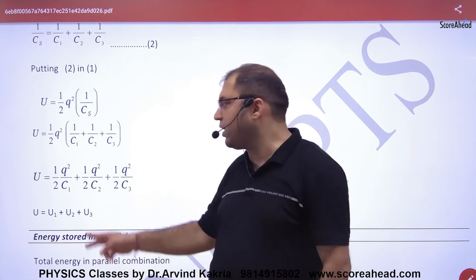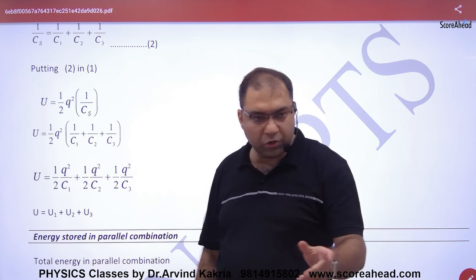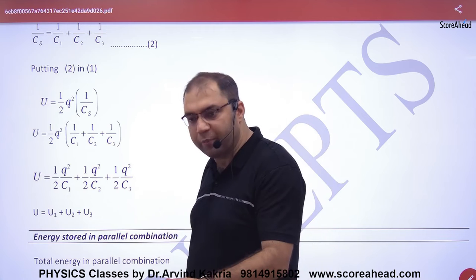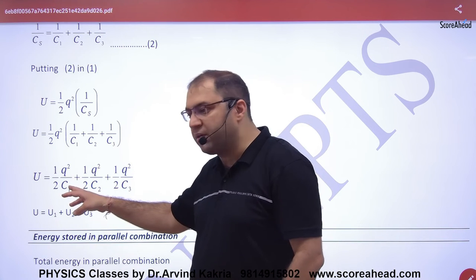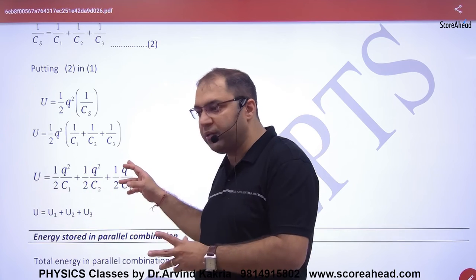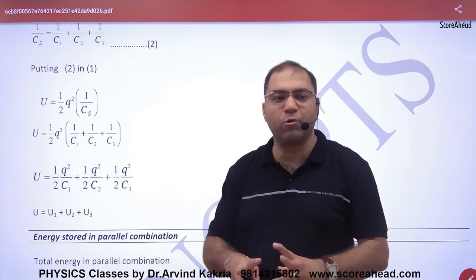So what will be the energy in the first capacitor? Half Q squared by C1. Second, Q squared by C2. Third, Q squared by C3. So the total energy in series was U1 plus U2 plus U3 equal.